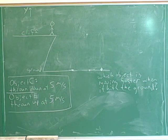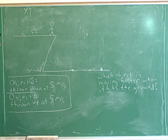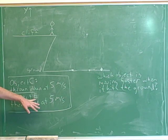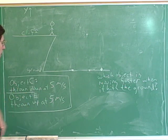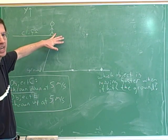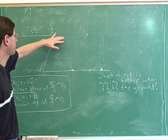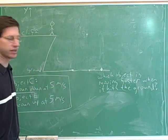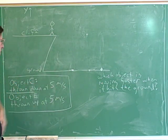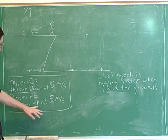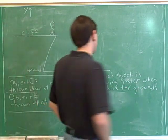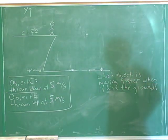Here's another conceptual problem. Object C is being thrown down at five meters per second from the cliff. Object E is a new object being thrown up at five meters per second from the cliff. All of these objects are thrown from the height of the cliff and eventually hit the ground. Object C is thrown straight down at five meters per second and object E is thrown straight up at five meters per second. Which object is moving faster when it hits the ground? Please pause the video and give that some thought.